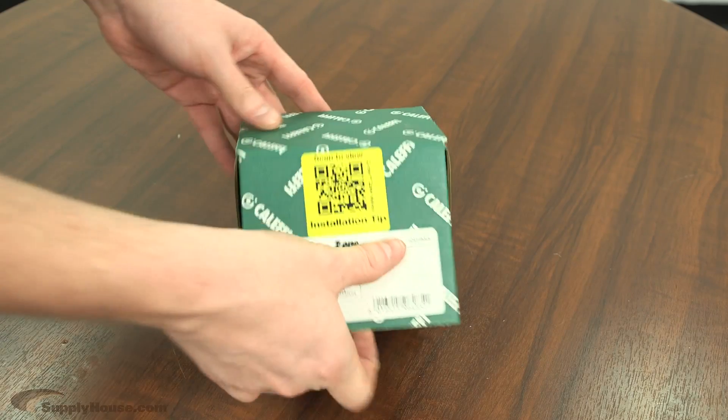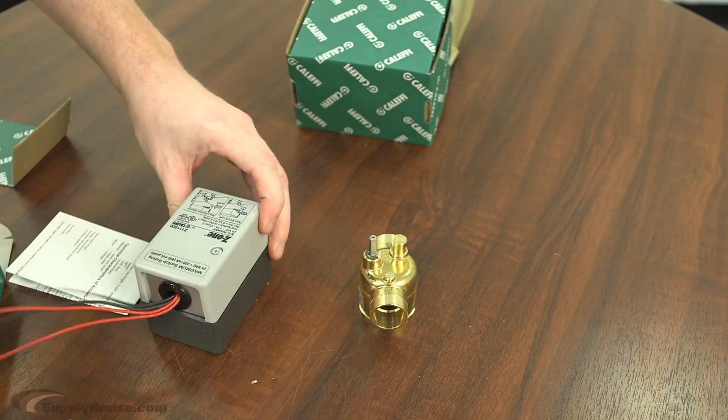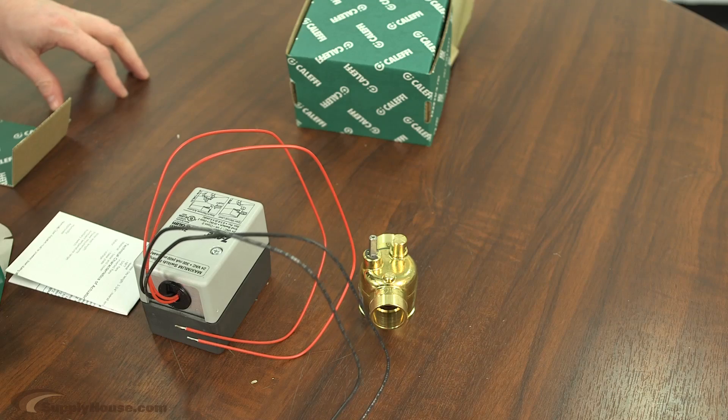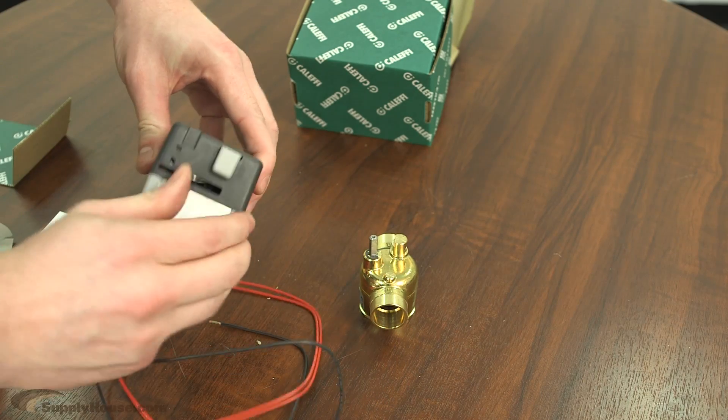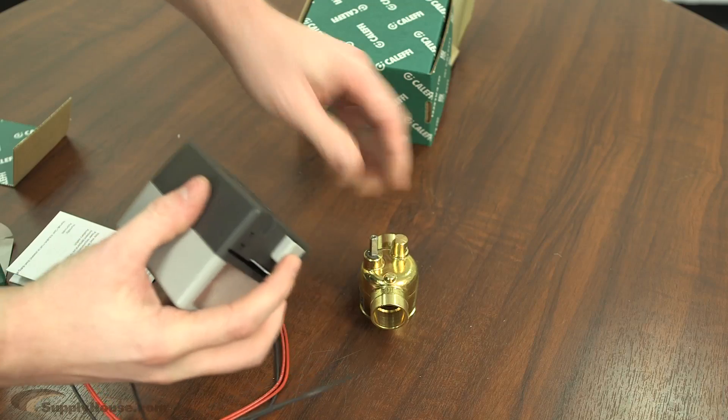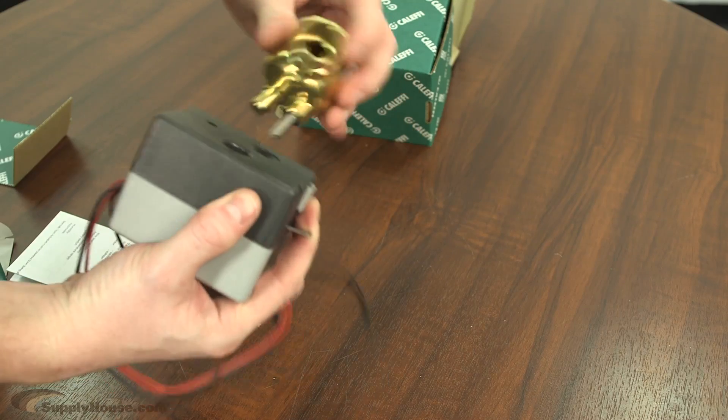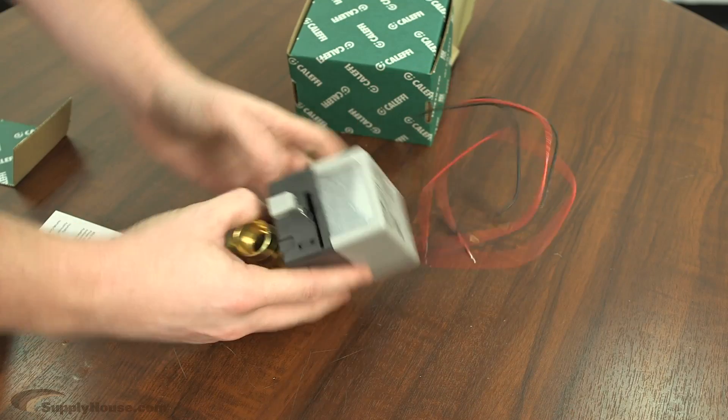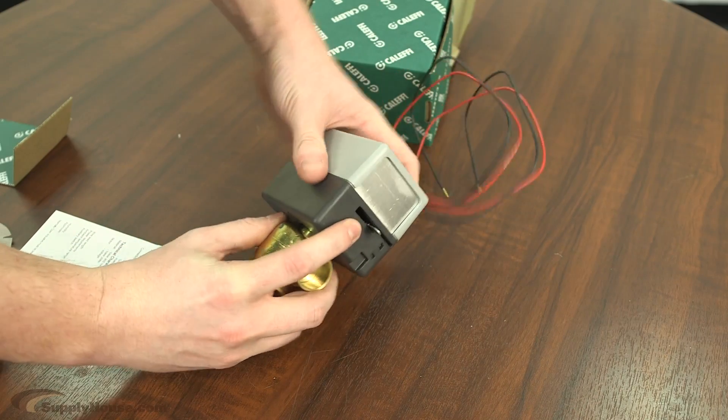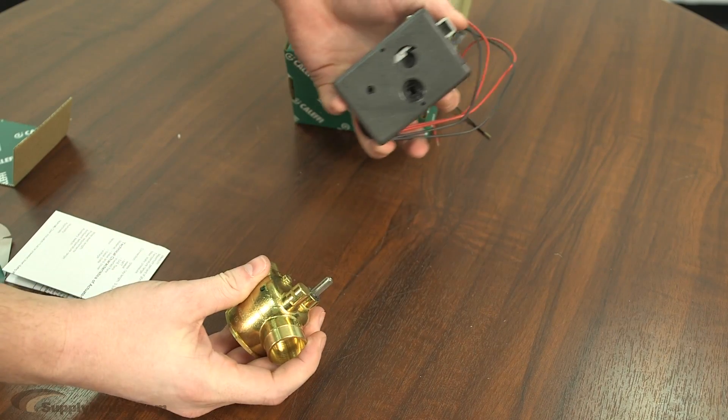Here we have the Calethi Z series. The valve body and the actuator are shipped separately. These are really easy, too. They're a lot like the Erie. First, you want to lock it open and press the button down. Then you can fit the shaft and the locking mechanism to the valve body. And then to release it, you just depress the button, pull it off, and you're set.